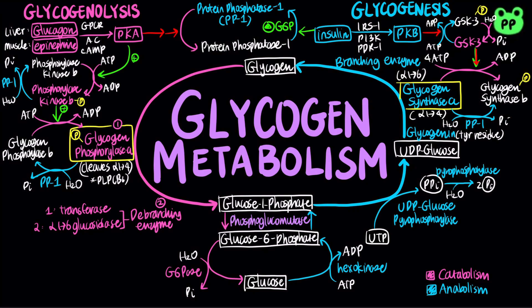Overall, the regulation of glycogen metabolism mostly involves dephosphorylation and phosphorylation reactions, and it is important to know whether the phosphorylated or dephosphorylated form is active. All the inactive forms are labeled in white and all the active forms are labeled in color.